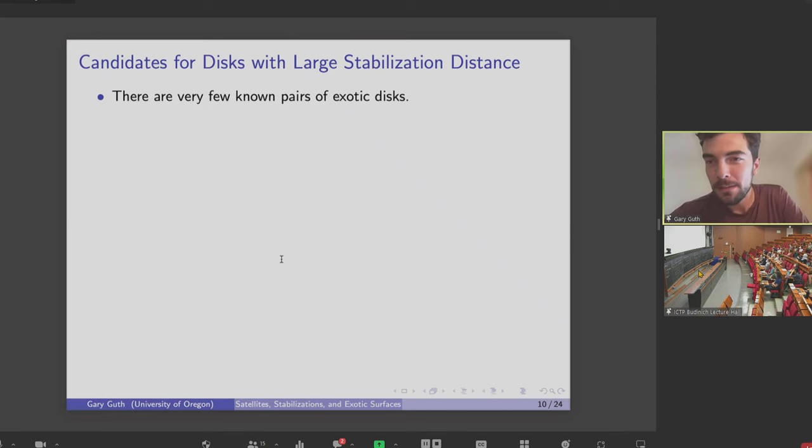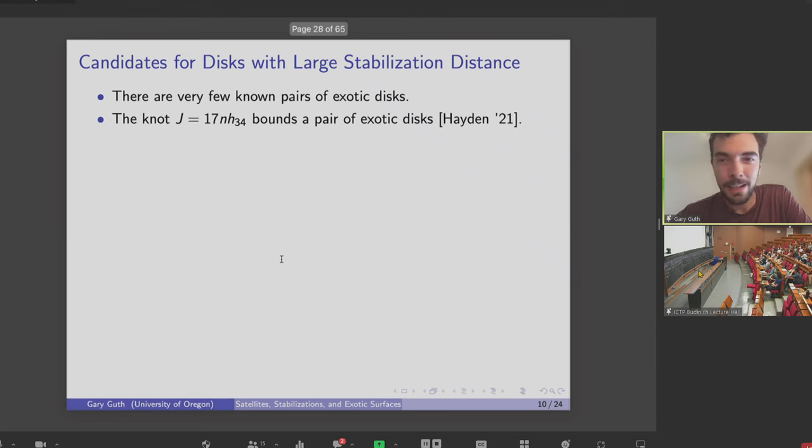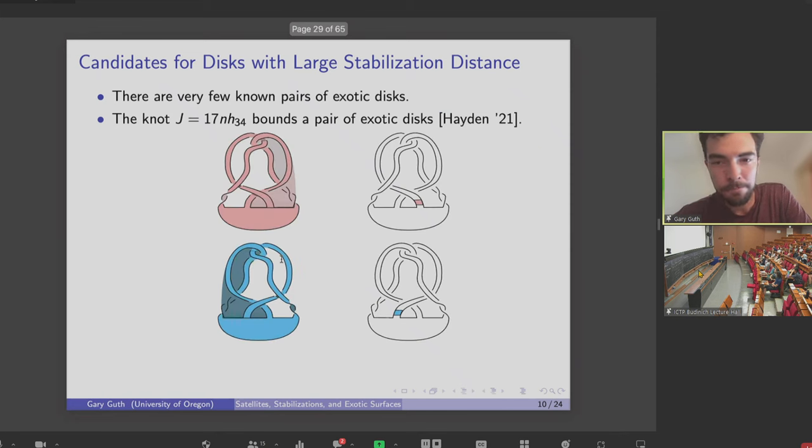So maybe the first obstacle is that there are not a ton of known exotic disks floating around. One example is due to Kyle Hayden. So he has this knot, which we'll call J, that bounds a pair of disks, which are topologically isotopic but not smoothly isotopic at the boundary. On the left, there's sort of an immersed picture. On the right, there's a handle decomposition. And the bands here are the saddles in these two disks.